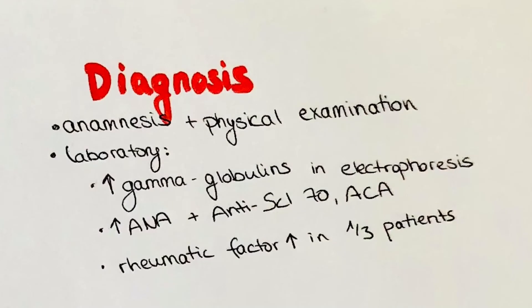Systemic sclerosis is diagnosed by thorough anamnesis and symptom-specific organ examination. In electrophoresis, gamma globulins can be observed as being increased in the blood. Antinuclear antibodies, short ANA, are high, as well as anti-centromere antibodies, ACA. Anti-SCL70 and rheumatoid factor are also often heightened.